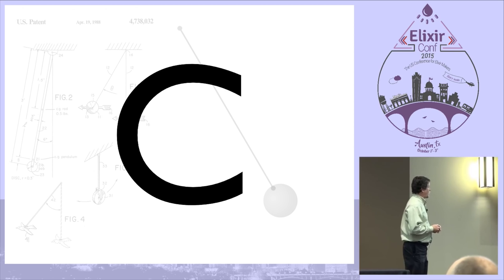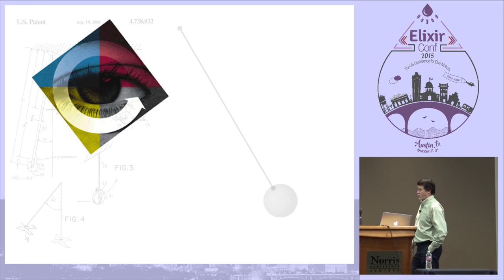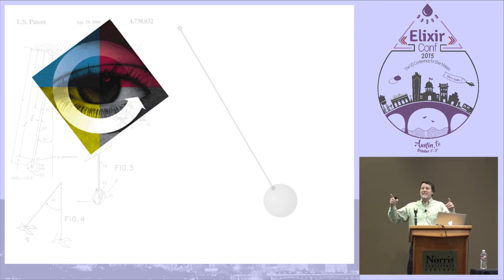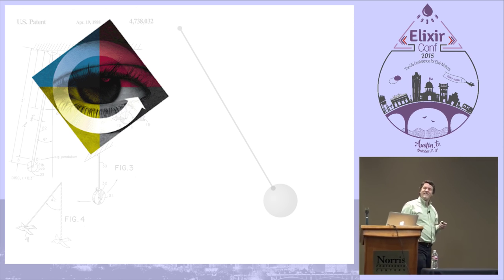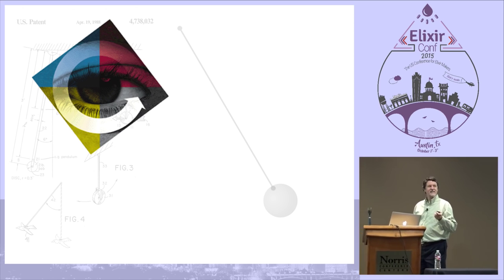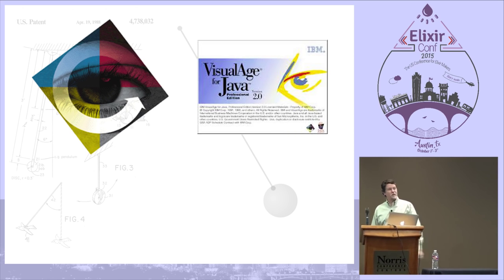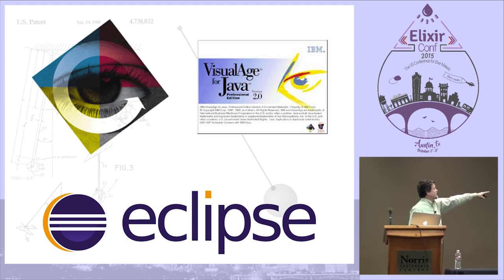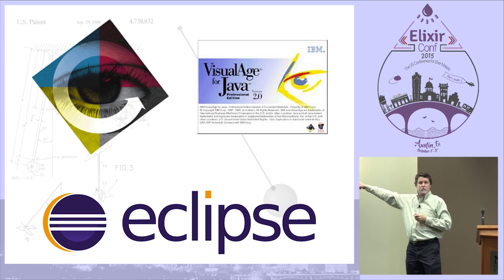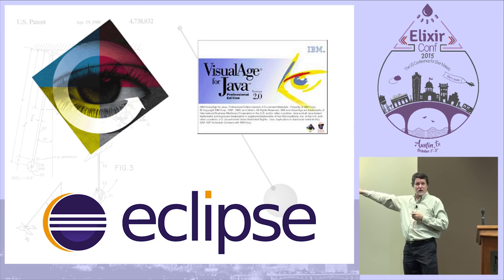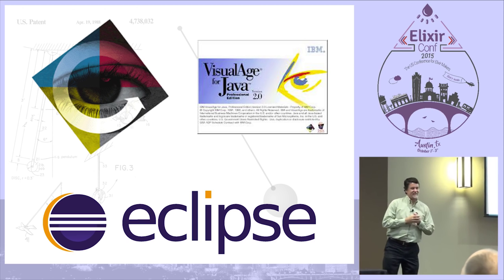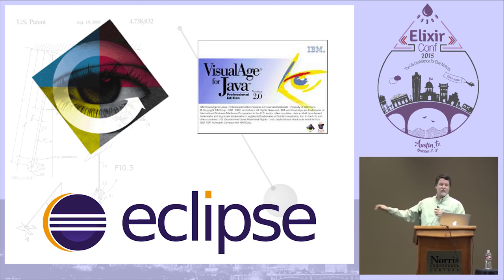IBM made another bet — we bought a company called OTI, Object Technology International. With it came Visual Age for Smalltalk, which turned into Visual Age for Java, which turned into Eclipse. So put your conspiracy glasses on: that blue and white striped IBM logo is in front of the Sun — Sun, Java, IBM. After C and C++ and objects, not everyone wanted to bet on C++, so IBM built a layer called the System Object Model so you could plug any arbitrary language into an object model.